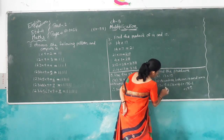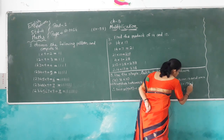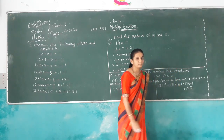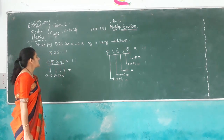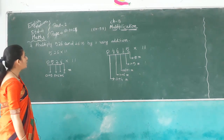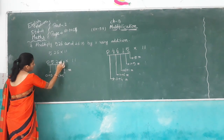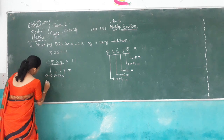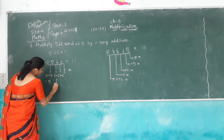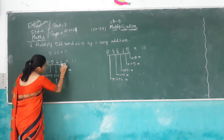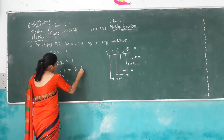Question number 4: Multiply by 11 using addition. 526 multiplied by 11: write 0, 5, 2, 6. Then 0 plus 5 is 5, 5 plus 2 is 7, 2 plus 6 is 8, and 6. So we get answer 5,786.